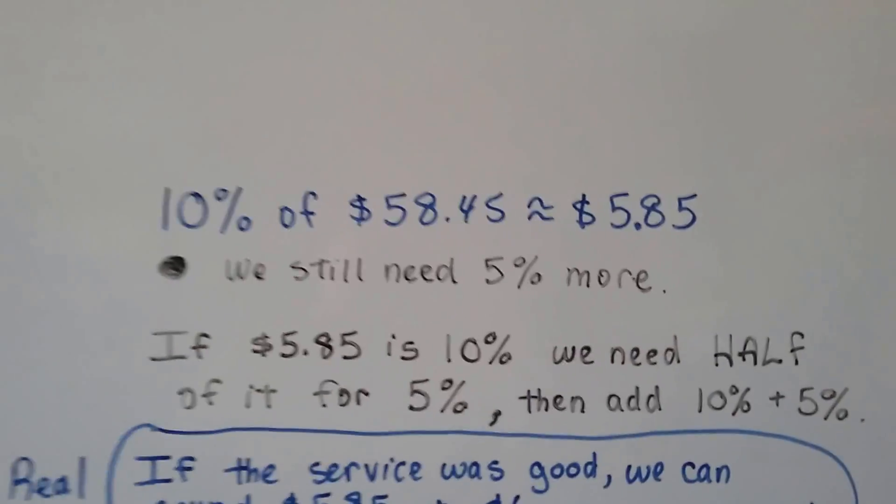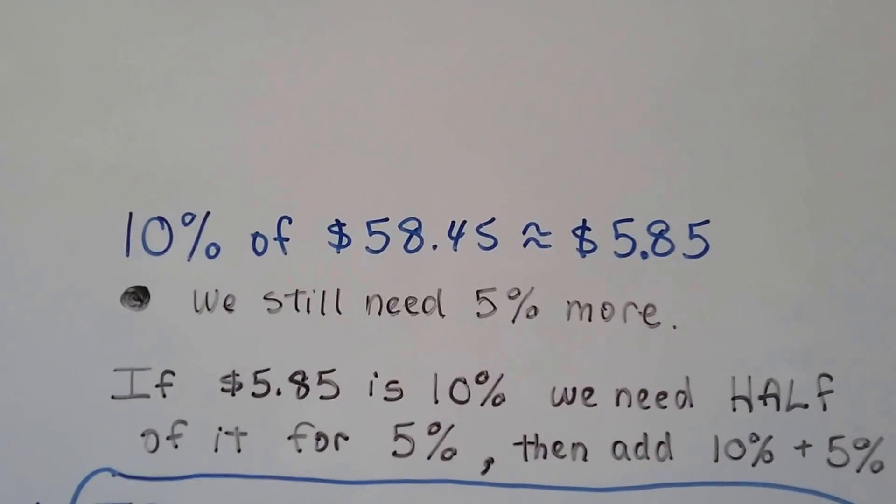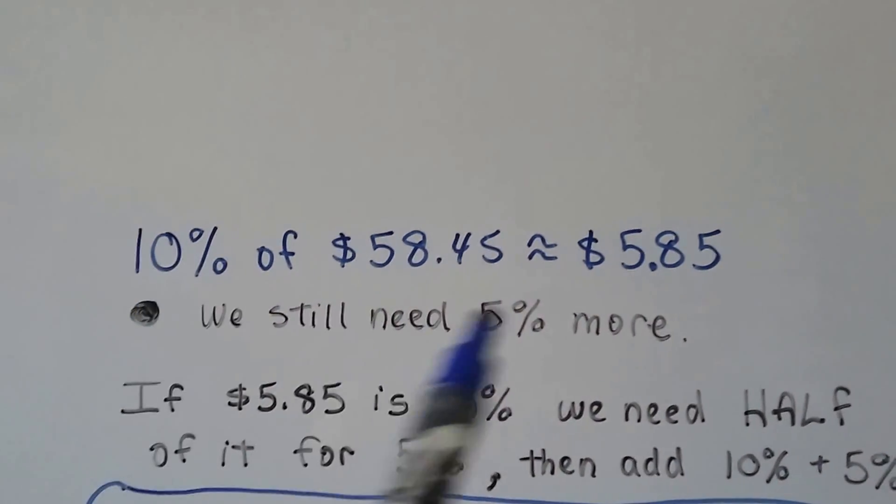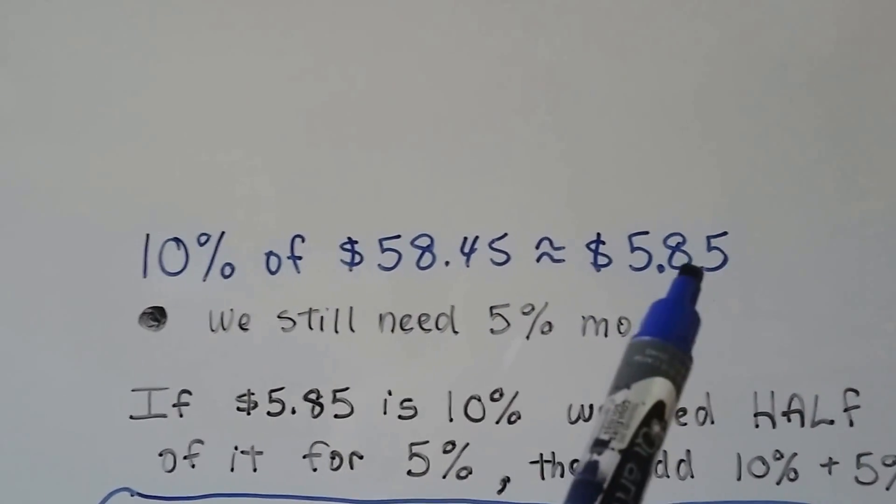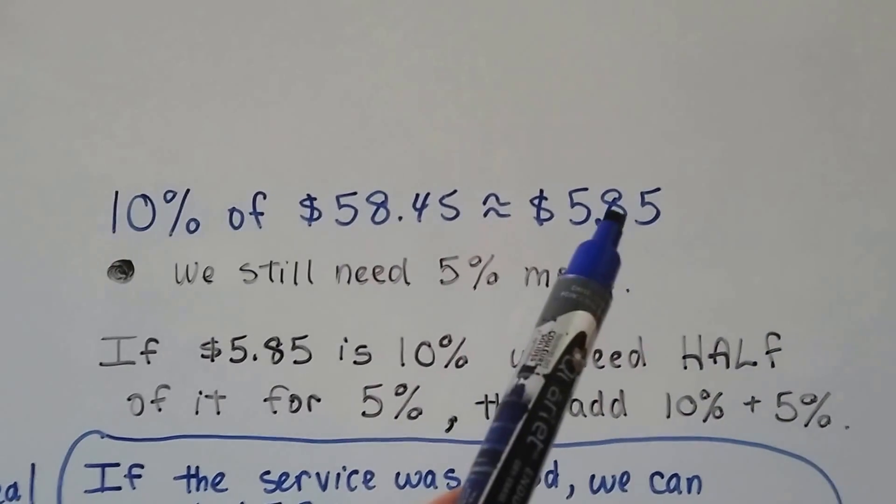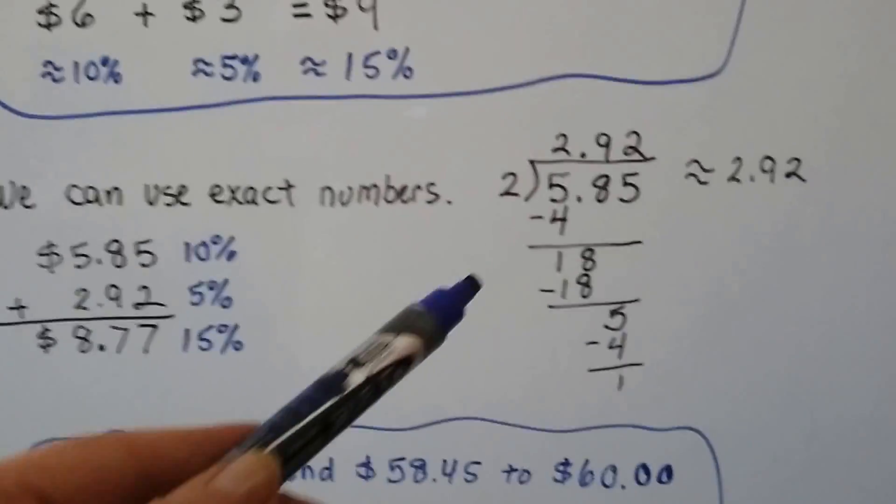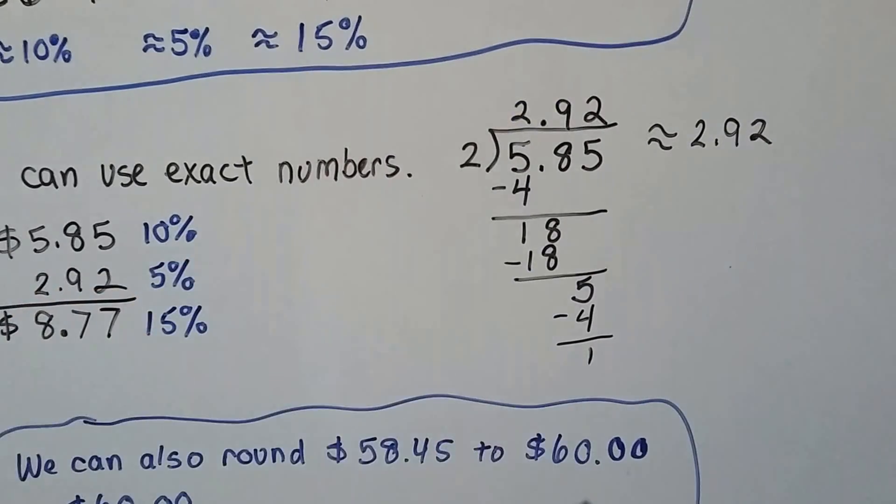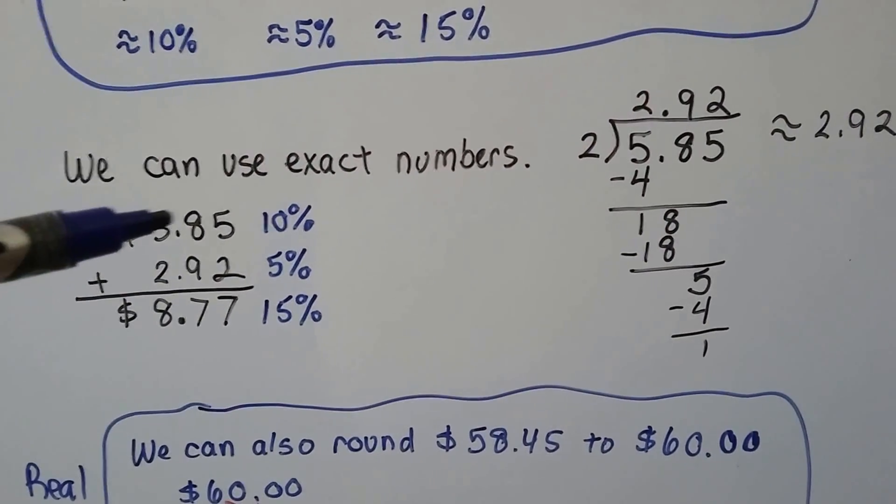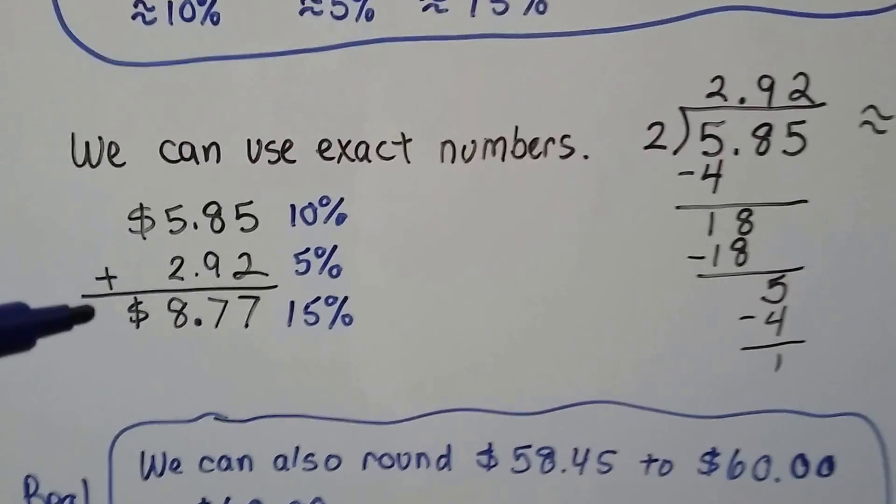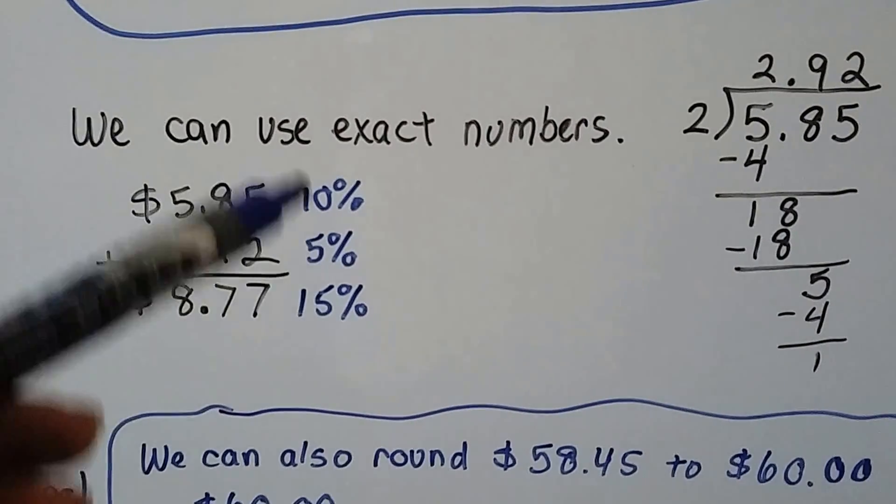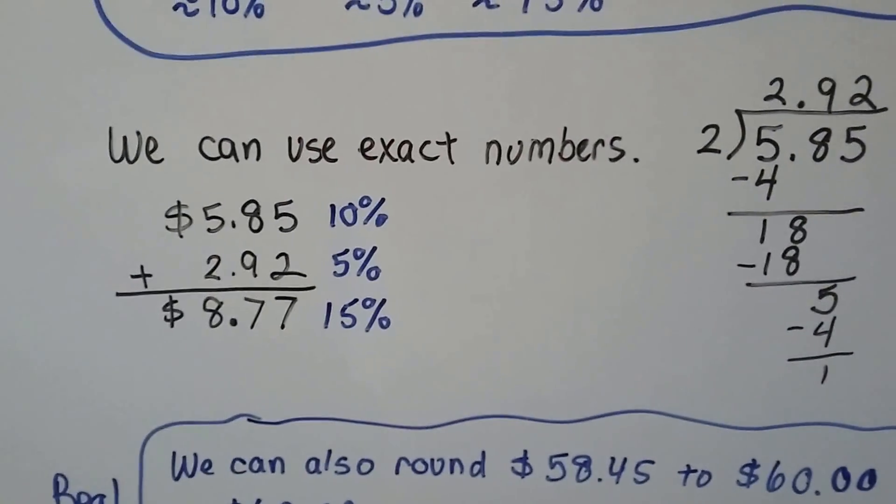Well, if 10% is $5.85, we still need 5% more so that we'd have 15, right? So, if 10 is $5.85, 5 would be half of that, wouldn't it? So, all we have to do is cut this in half. When we do our division, we see that half of that is $2.92 approximately. We do have a little remainder, but we add the $5.85, which is 10%, to the $2.92, which is half of it as 5%, and total them to get 15%, it's $8.77.